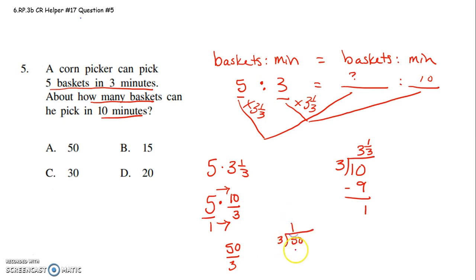3 goes into 5 once. 1 times 3 is 3. Subtract off. Remainder of 2. Drag down the 0. 3 goes into 20 6 times. 3 times 6 is 18. 20 minus 18 is a remainder of 2. So it's actually 16 and 2 3rds baskets.